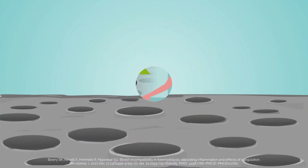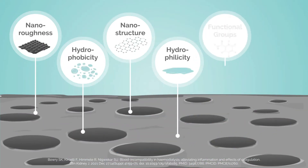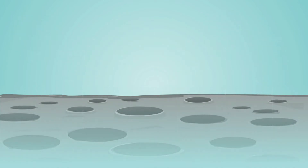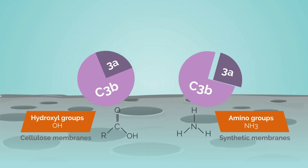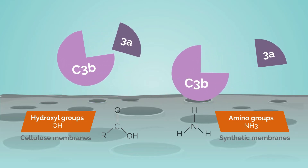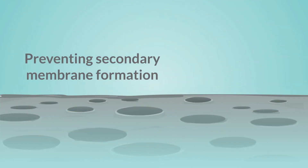This goal can only be achieved by better understanding the mechanisms and physicochemical factors which determine adverse interactions between the blood and membranes. For example, C3 of the complement system is strongly activated by hydroxyl or amino groups of cellulose or PVA membranes. Hence, the biochemical interactions of blood constituents with the membrane may be improved by omitting nucleophilic groups on the membrane surface.